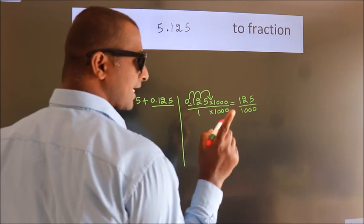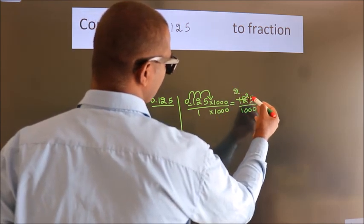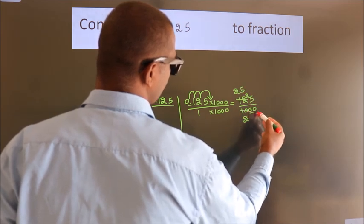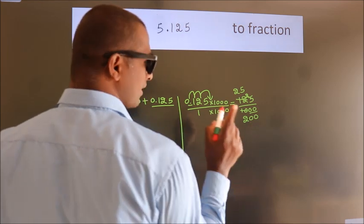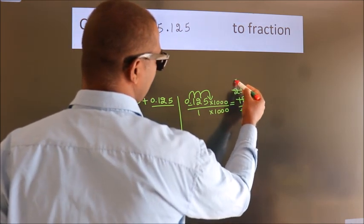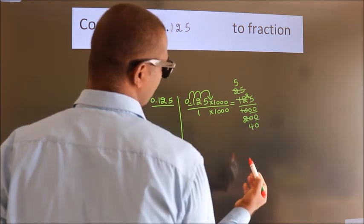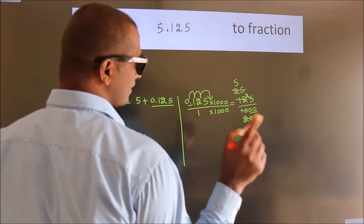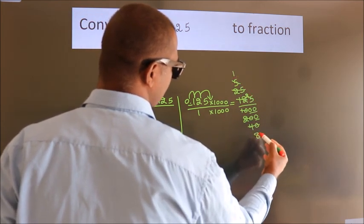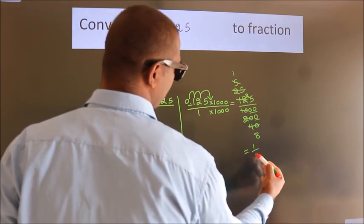Now I cancel with 5. 5 into 25 is 5, 5 into 1000 is 200. These zeros as it is down. I cancel with 5 again. 5 into 5 is 1, 5 into 40 is 8. So the fraction we got is 1 by 8.